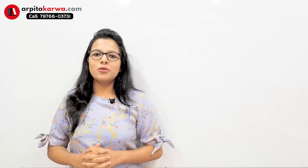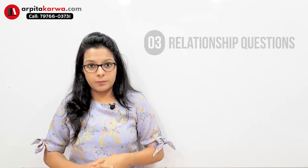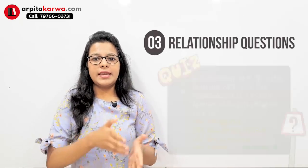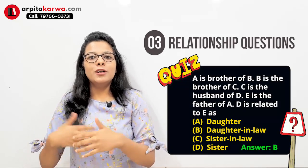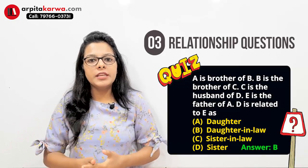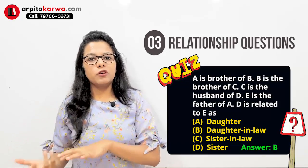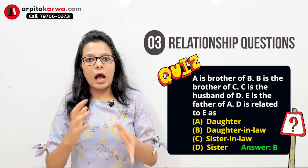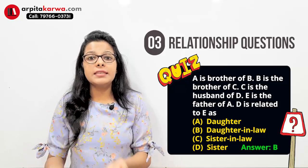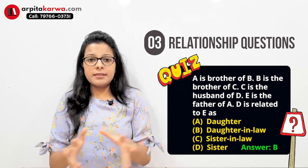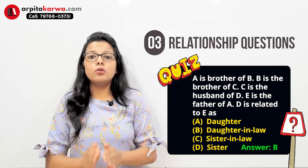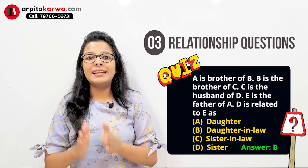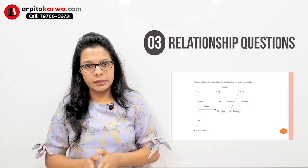The next type of questions are based on relationships. You will get a question like: A is the brother of B, and C is the daughter of D, and A is mother of D — so how are A, B, and C related? You will get some complex questions like these. The best way to solve them is to make a diagram, like a family tree.